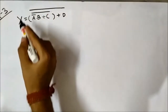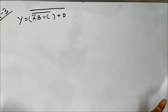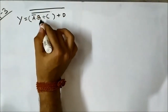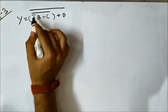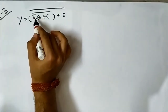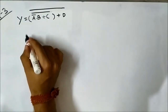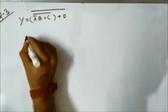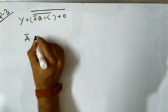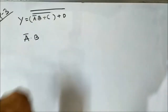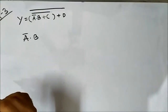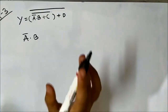Now we will implement this expression using NOR gates. The portion we will focus on first is: a complement AND b. Let's first talk about how to implement this portion using NOR gates, and then we will carry it further.